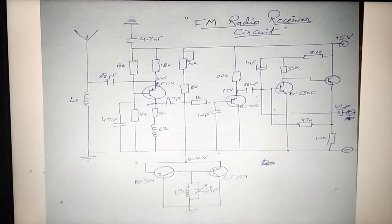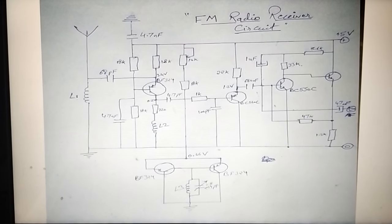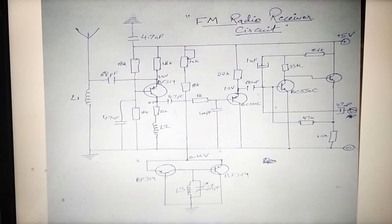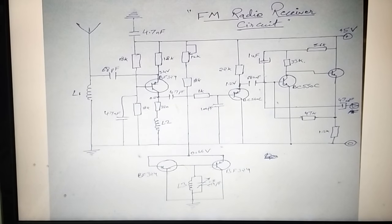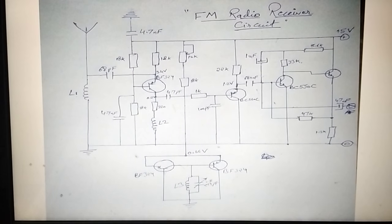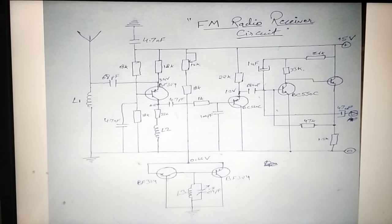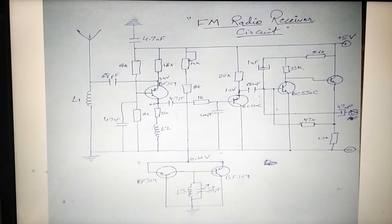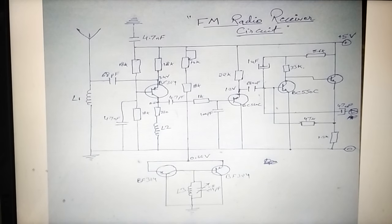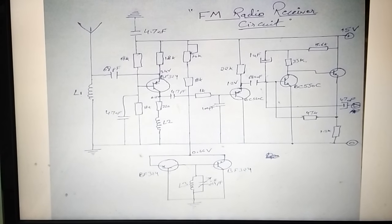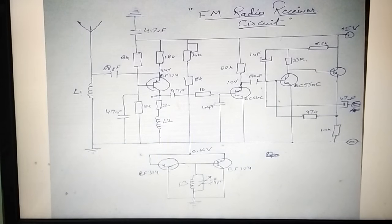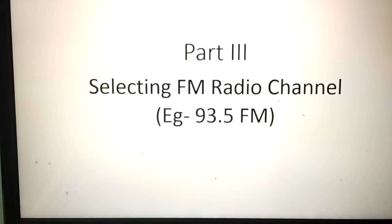The audio signal is then amplified by T4 and T6 and transmitted at the output through capacitor C9. The radio receiver is adjusted to different stations with the help of capacitor C5. The P1 potentiometer is adjusted until the best reception is obtained. If we attach an audio amplifier and a speaker, this FM receiver can be made very compact, like a pocket radio.